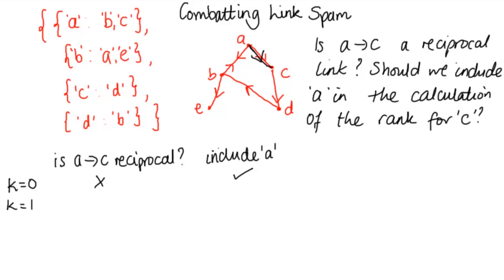If K equals one, we're looking to see if there's a direct link back from C to A and there isn't. So AC is not reciprocal and we should include A.